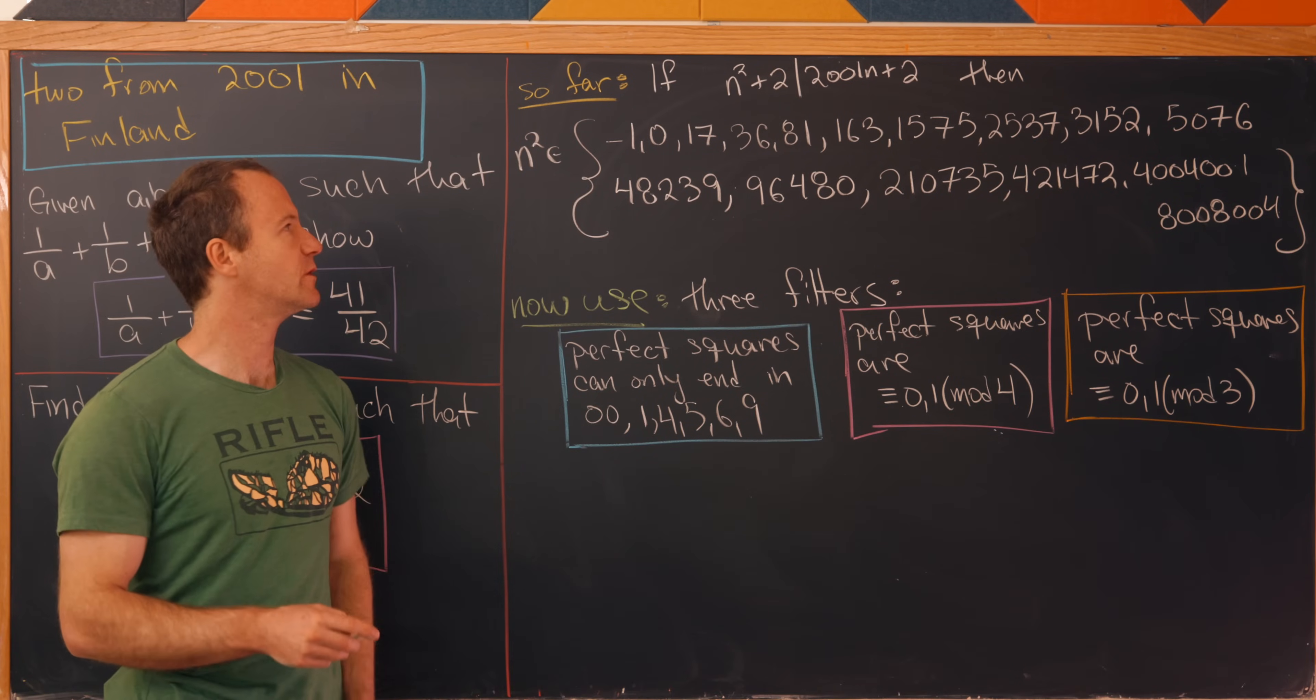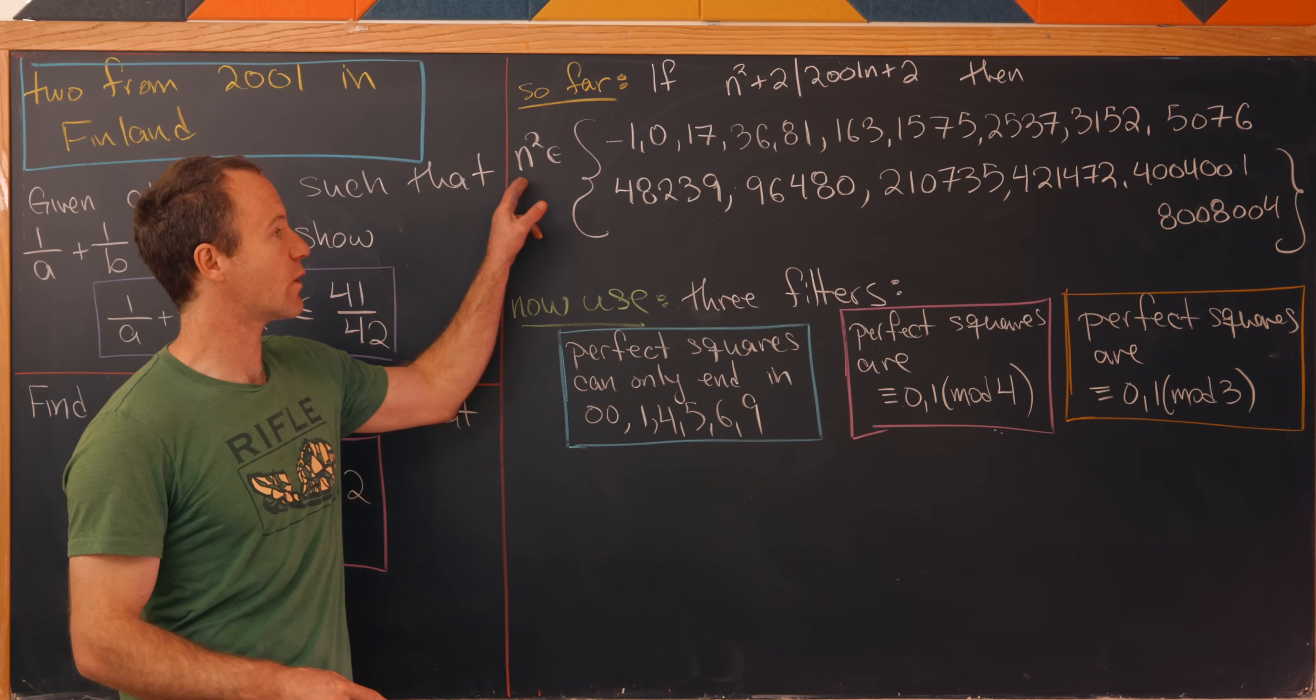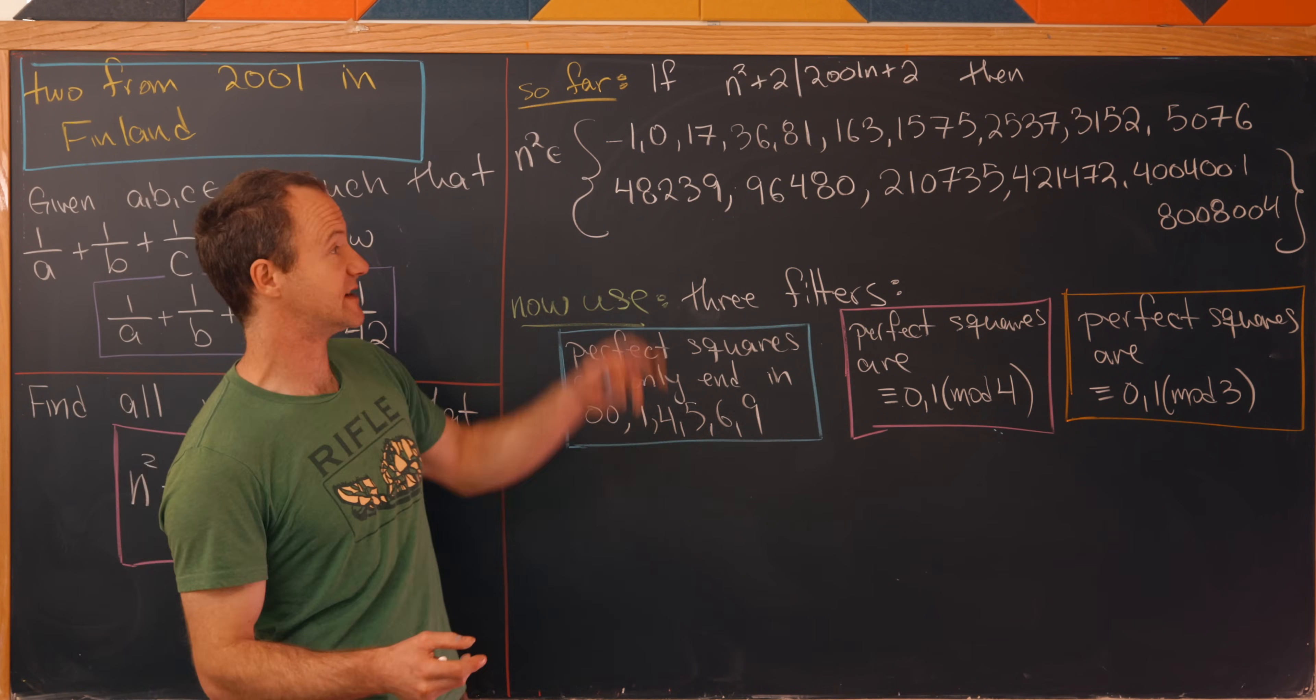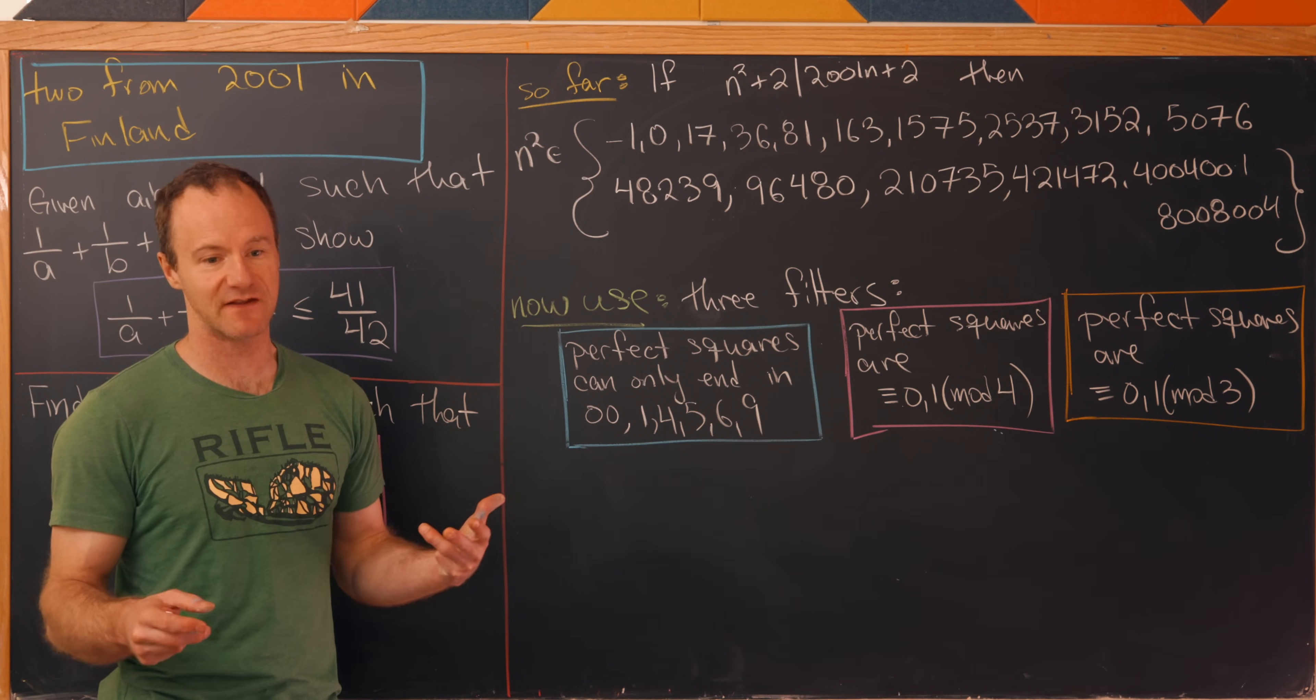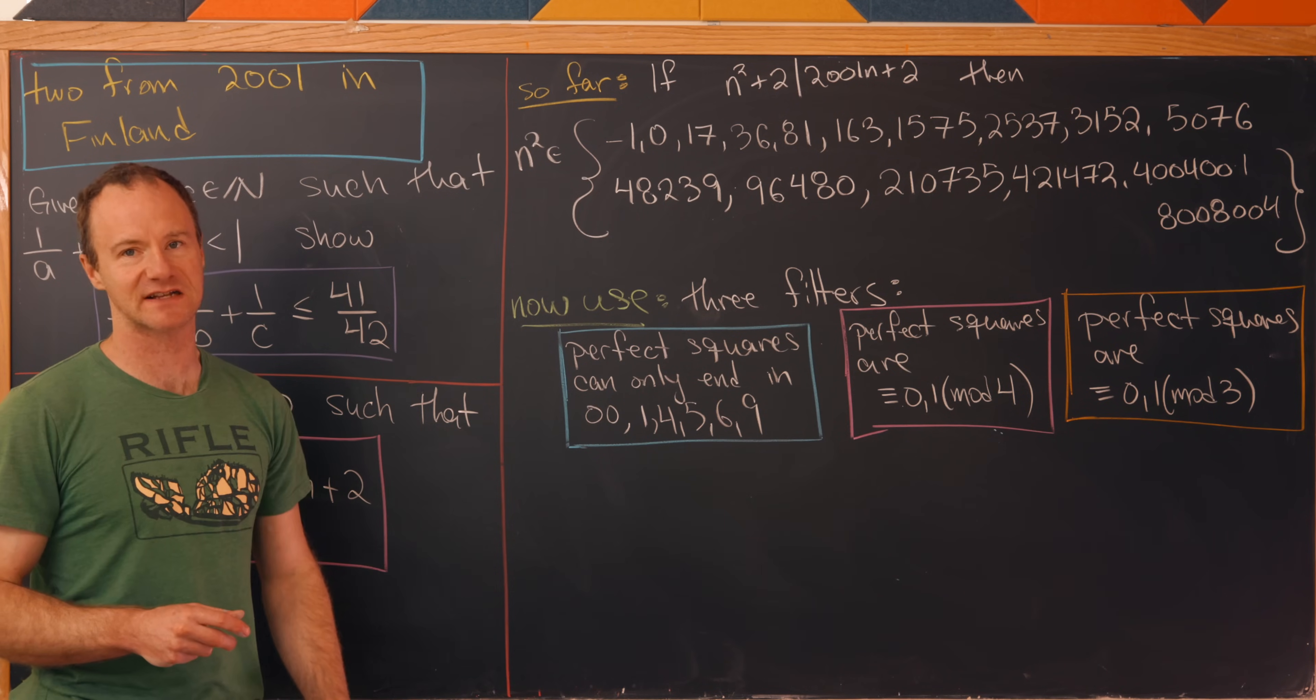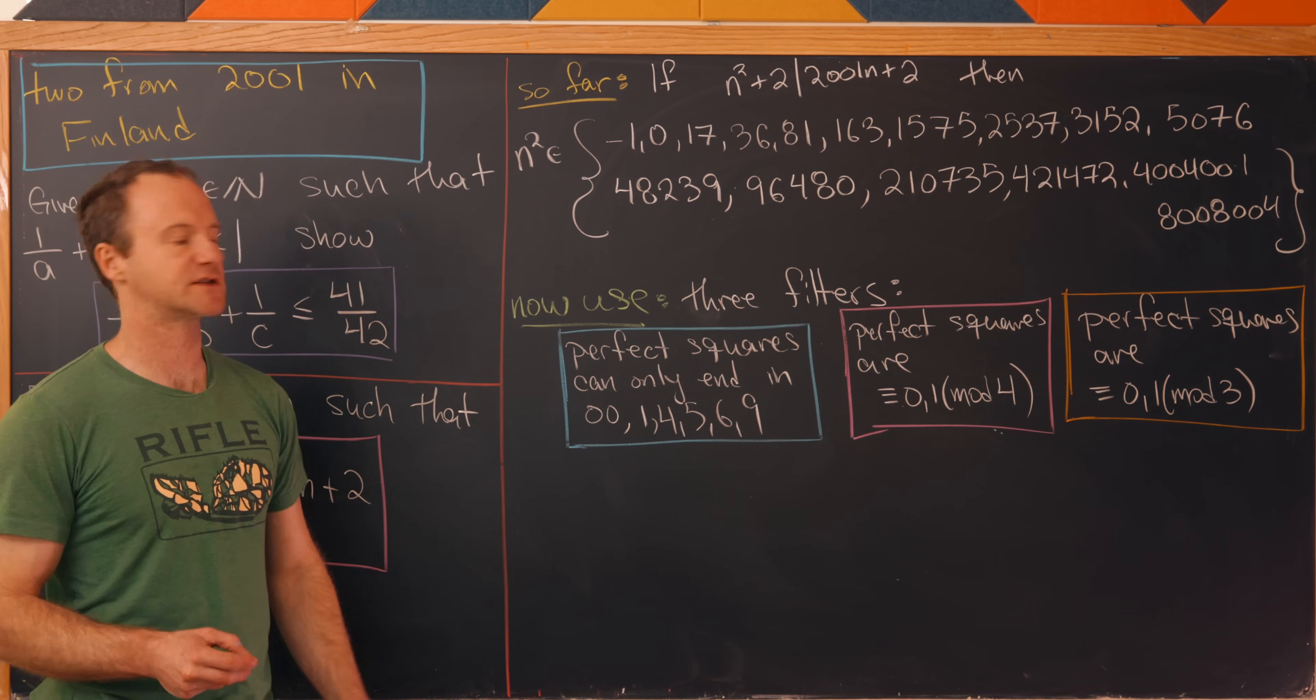So based off what we just did, we know that if n² + 2 divides 2001n + 2, then n² comes from the following fairly exhaustive list. And I guess from here you could just try to take the square root of all of those and determine which ones of those are perfect squares, and that'll be your answer. But I think that's a little bit too much work, so let's use some well-known facts about perfect squares. And I'll call these three different filters. So we're filtering out the non-squares.